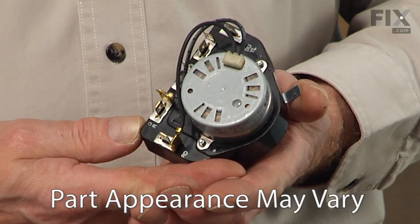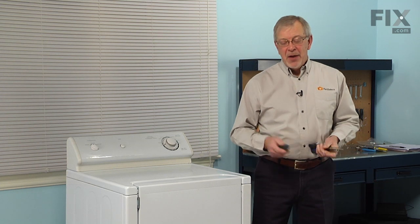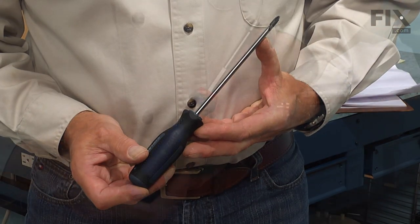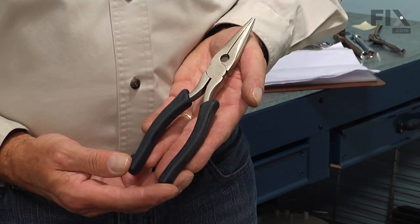Today, we're going to show you how to change the timer on your dryer and it's a really easy job. All we're going to need is a Phillips screwdriver, a quarter-inch nut driver, and a pair of needle nose pliers. Let me show you how we do it.